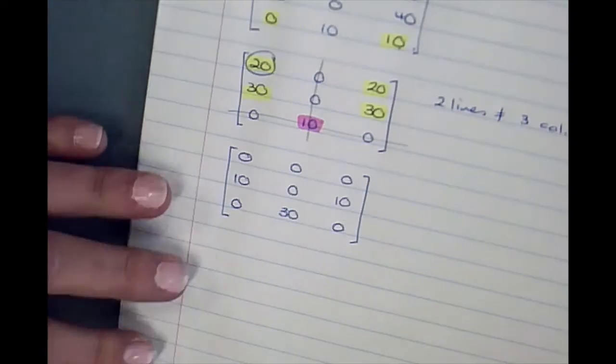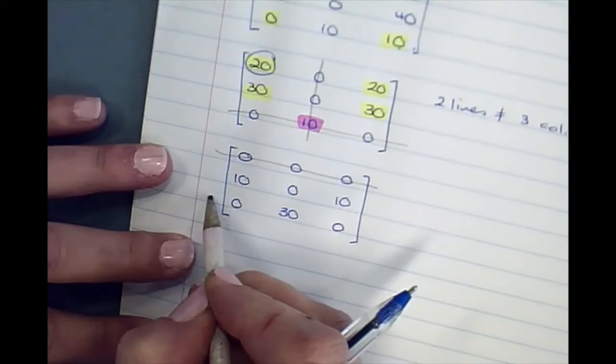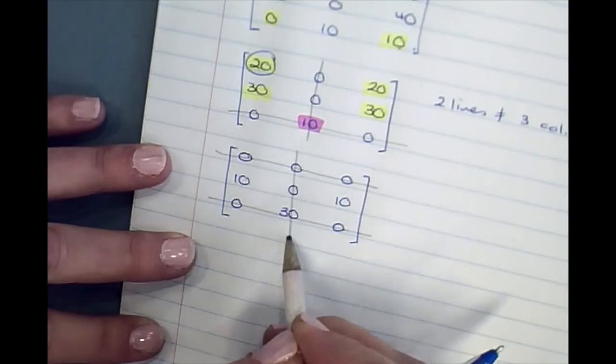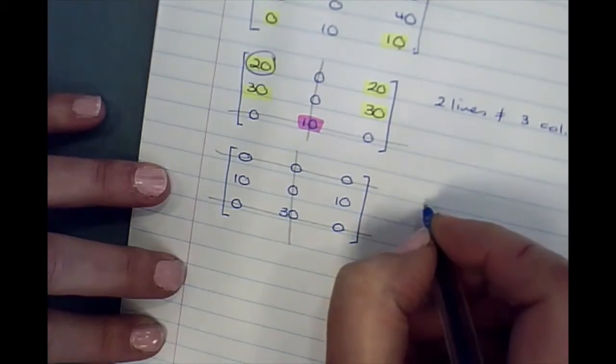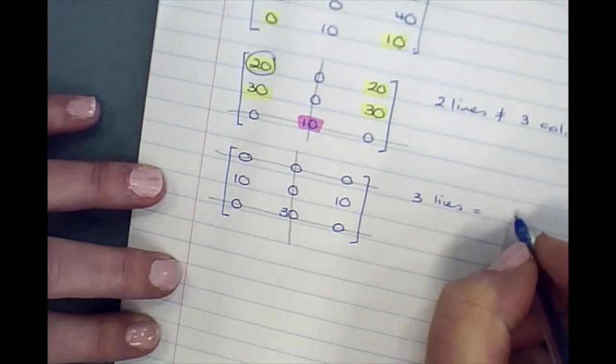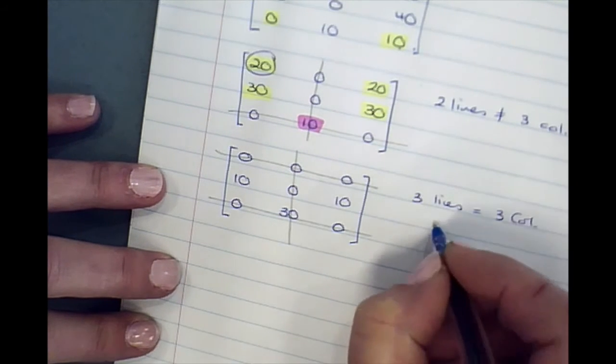We're now going to draw lines through, and we have three lines, which equals three columns, so we're finished.